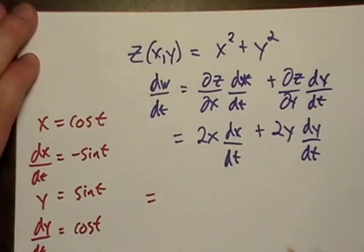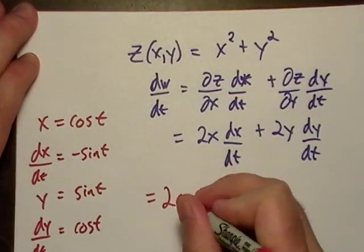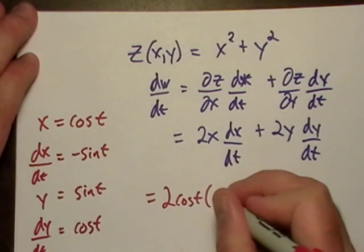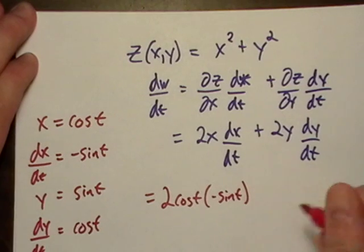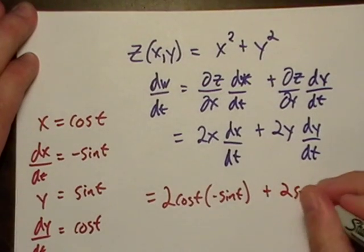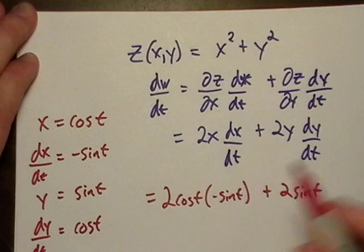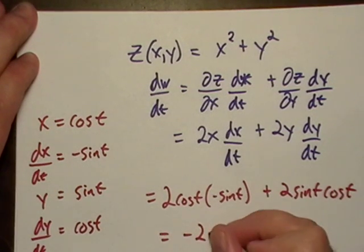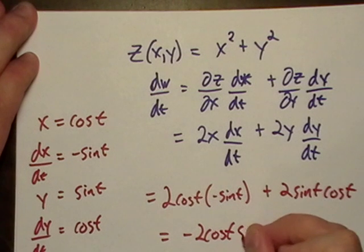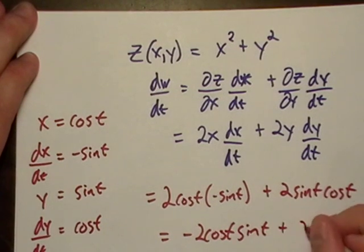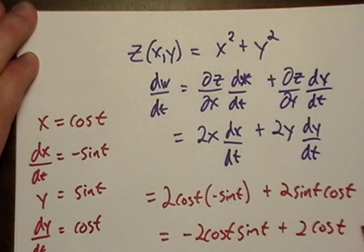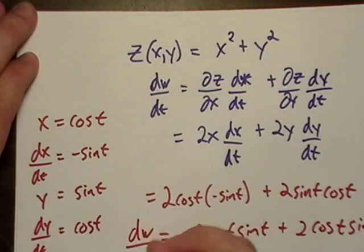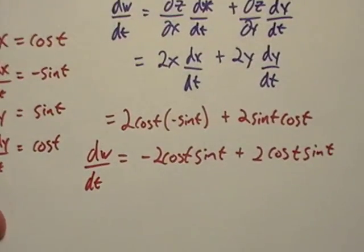So now let's just put down the plug and chug. So we got 2 cosine T times DX DT, and that's just negative sine T, plus 2Y, which is just Y is just sine T, and DY is cosine T. And you'll see pretty quick that these things just cancel each other out.